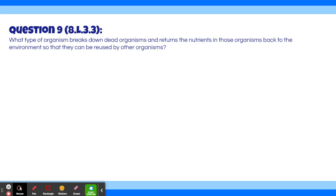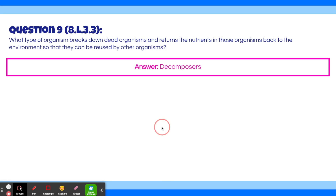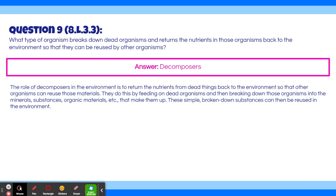Question 9. What type of organism breaks down dead organisms and returns the nutrients back to the environment so they can be reused? The answer is decomposers. Decomposers feed on dead organisms and break them down into minerals, substances, and organic materials. These broken-down substances can then be reused by other organisms in the environment.